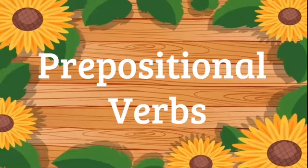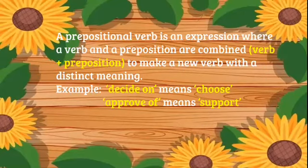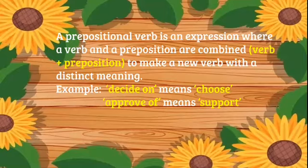Welcome to the prepositional verbs lesson. A prepositional verb is an expression where a verb and a preposition are combined to make a new verb with a distinct meaning. For example, we have 'decide on,' which means choose, and 'approve of,' which means support. These are prepositional verbs — 'decide on' and 'approve of' — with their distinct meanings.